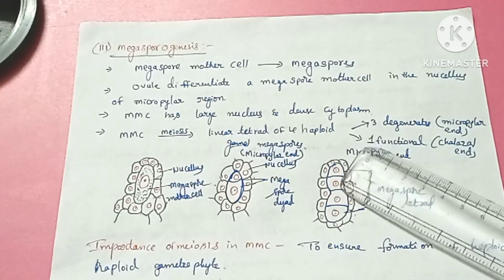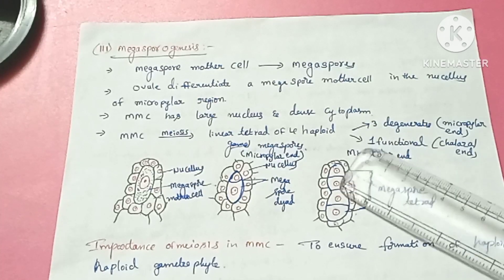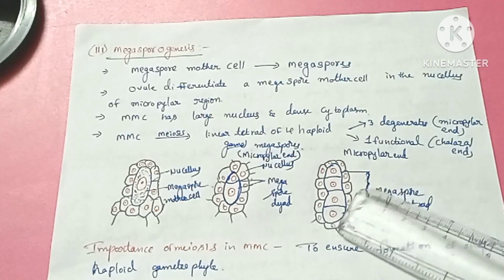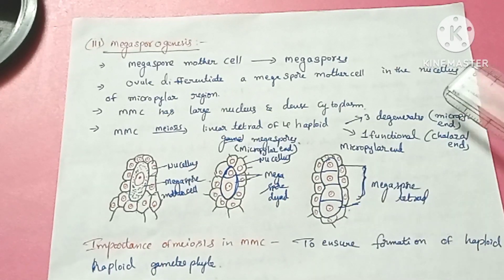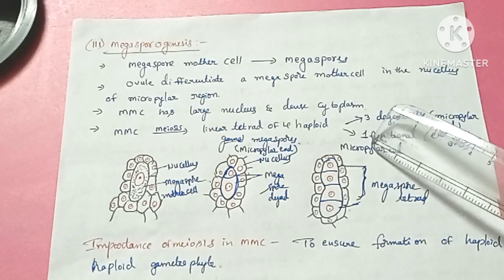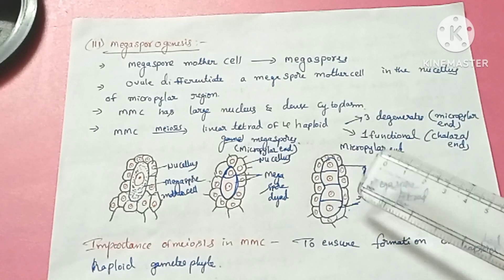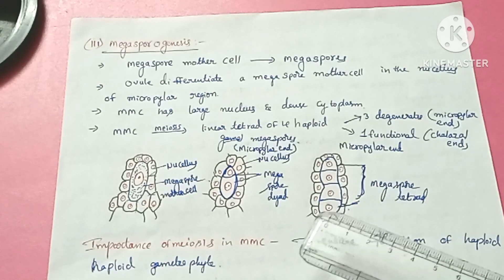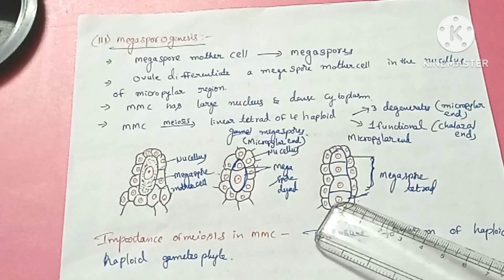So a tetrad of haploid megaspores is produced, giving four megaspores. Out of these four, only one is functional and the other three degenerate. The three that degenerate are on the micropylar end, and the one megaspore present towards the chalazal end is the functional megaspore.